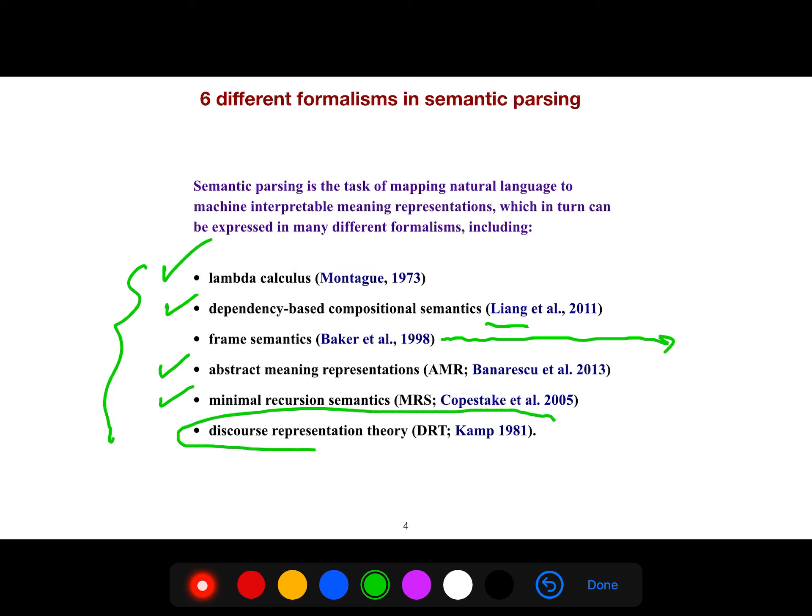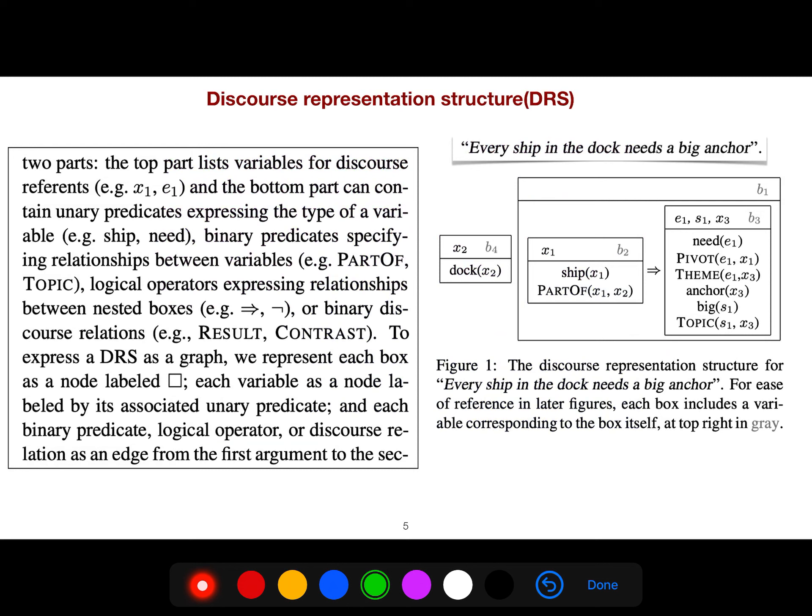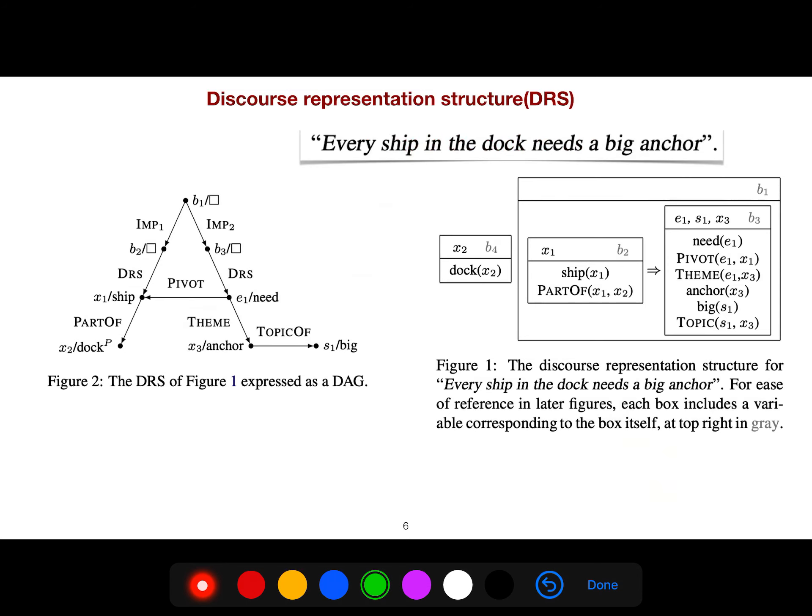The formalism I will explain in this article is discourse representation theory, or DRS discourse representation structure. Because in our human mind, cognitive scientists believe it's like embodiment. You should think that something happens, something goes. Language has embodiment. For example, every ship in the dock needs a big anchor.